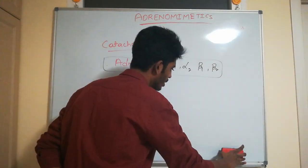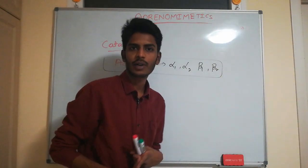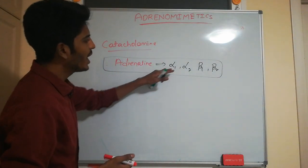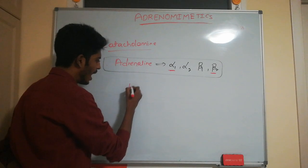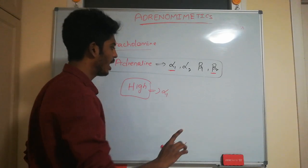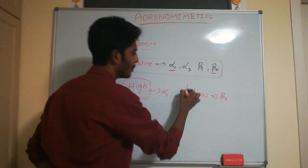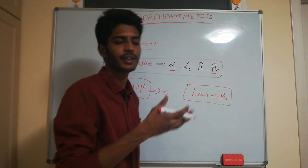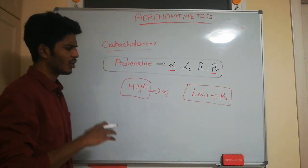Adrenaline stimulates alpha 1, alpha 2, beta 1, and beta 2, causing vasoconstriction and increased heart rate. At high concentration, adrenaline stimulates alpha 1 receptors causing vasoconstriction and elevated BP. At low concentration, adrenaline stimulates beta 2 receptors. During an adrenaline rush, alpha 1 stimulation leads to vasoconstriction and elevated blood pressure.